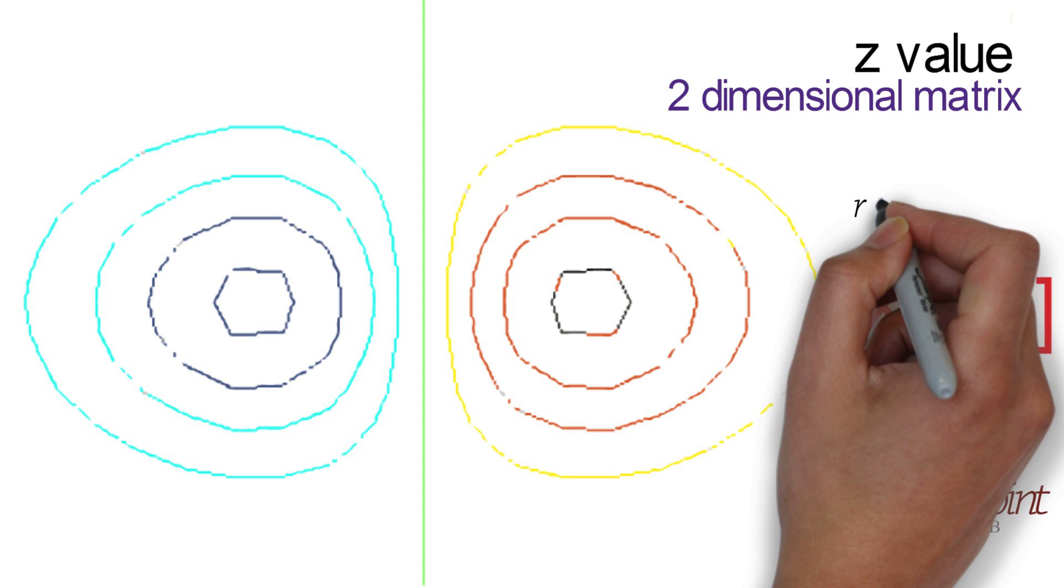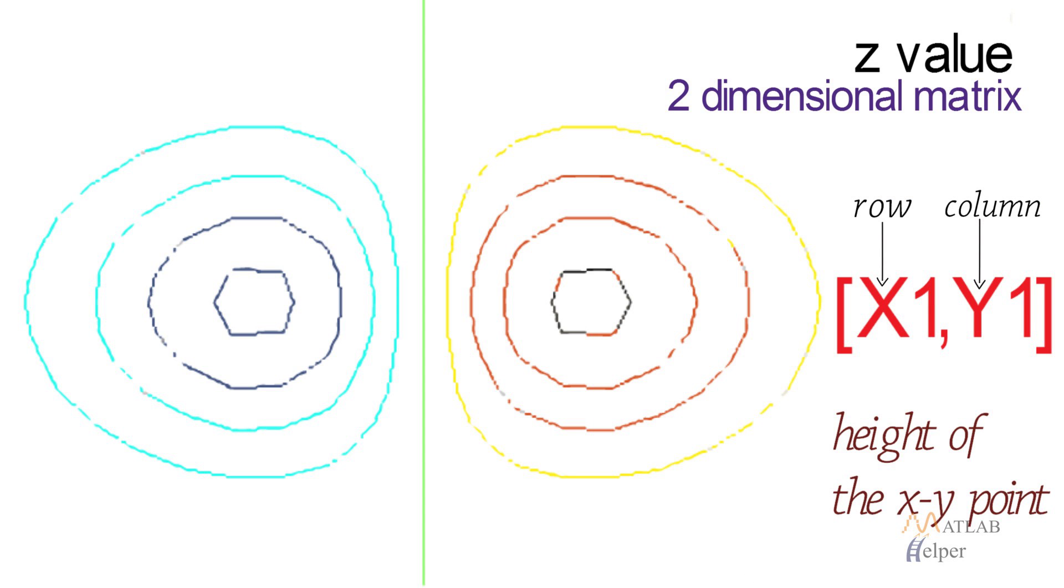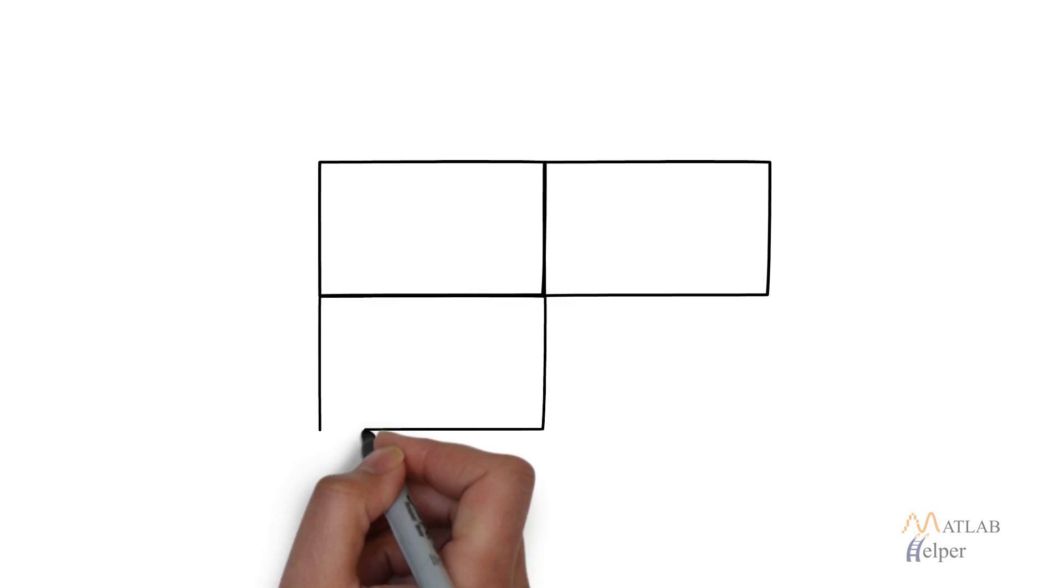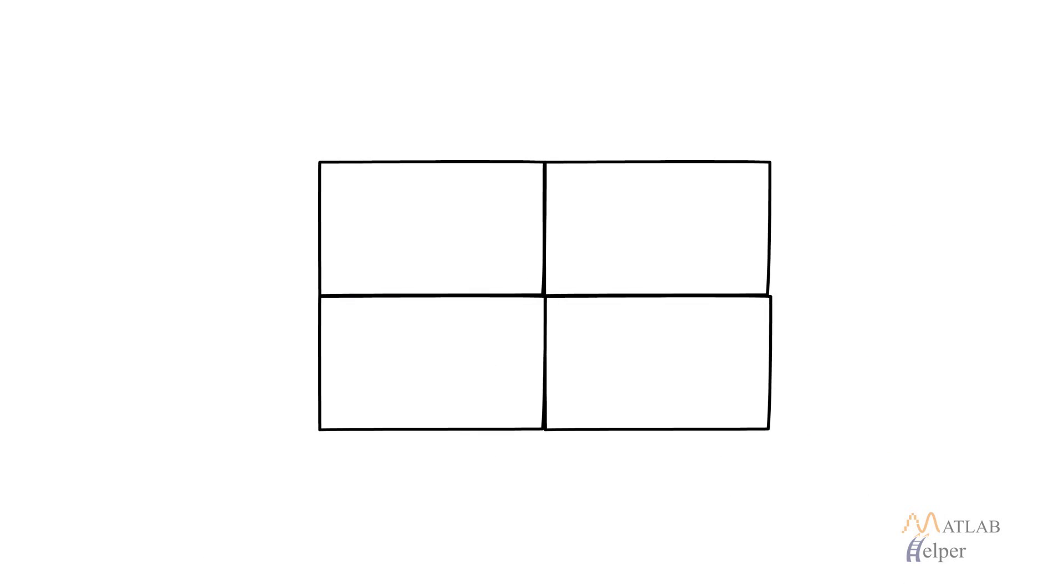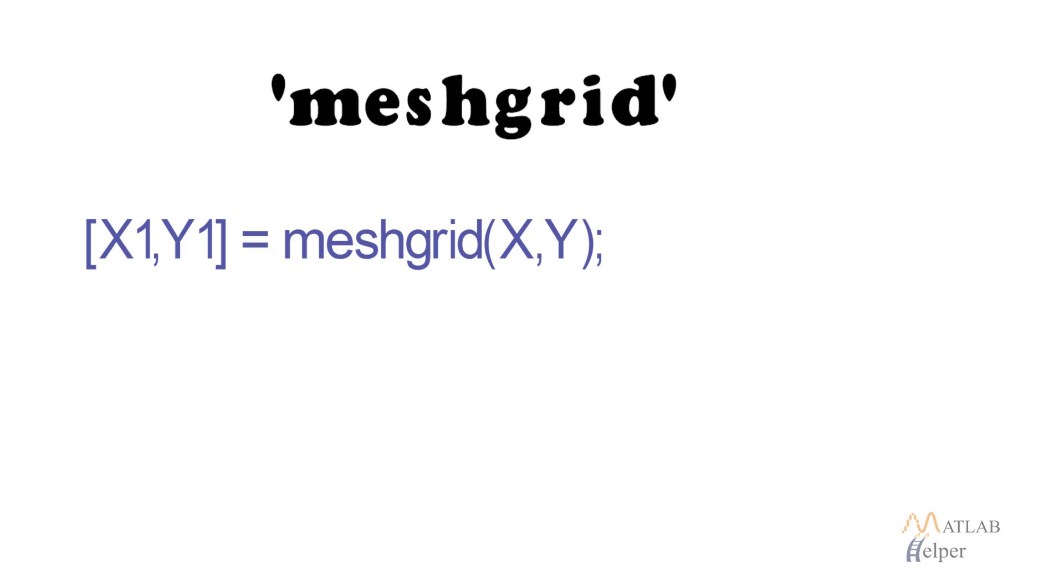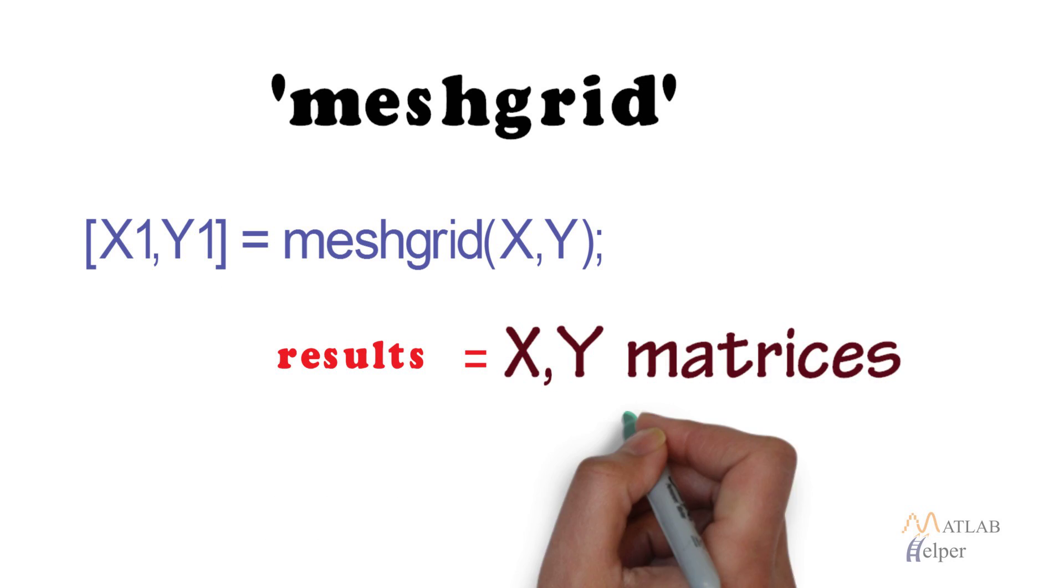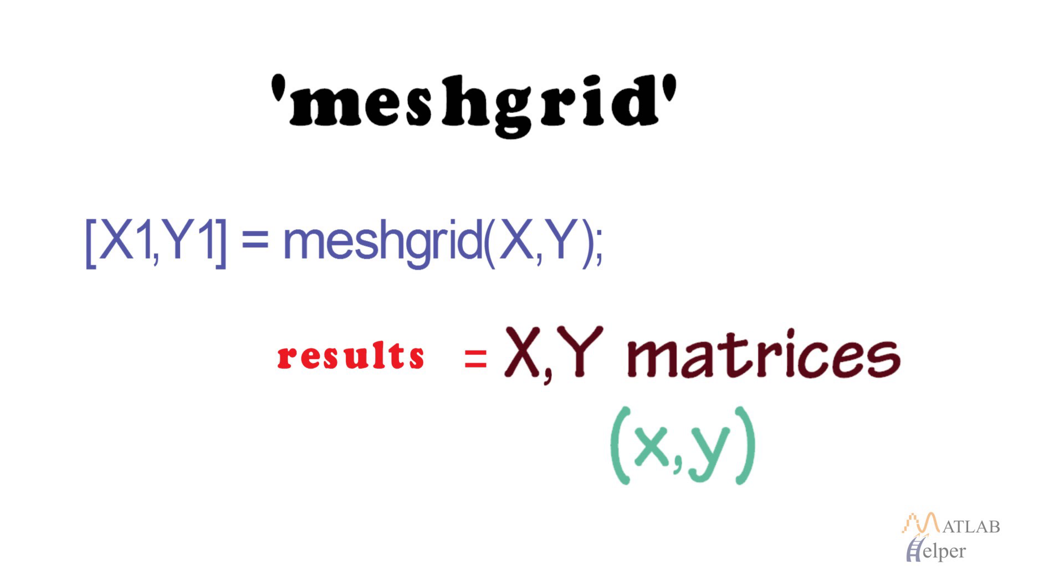In order to use the contour function, we need to first create a rectangular grid, which can be done using the function meshGrid. The resulting x, y matrices have x coordinates and y coordinates respectively.